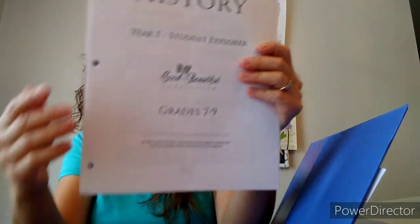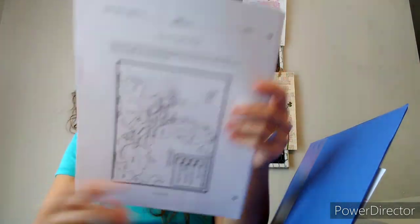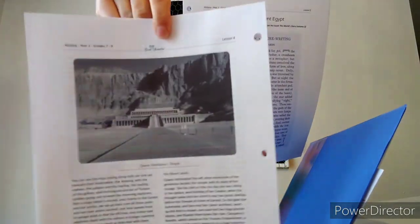My 7th grader also has the history binder and her student explorer for grades 7 through 9. There's maps, reading, and projects. For their language, history, and science they will have these three ring binders.